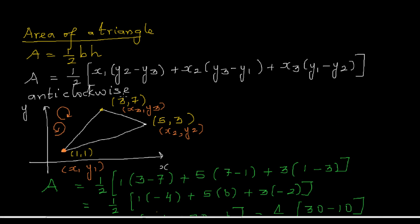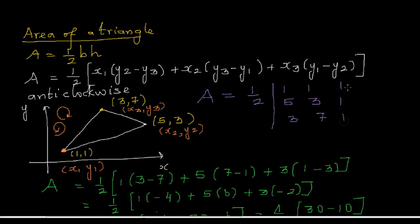For those who have learned determinants or matrices, this same formula can also be written in matrix form. Area equals half times the determinant of the matrix with rows (1, 1, 1), (5, 3, 1), (3, 7, 1). The 1s in the third column are placeholders to make a square matrix, and the coordinates are (1,1), (5,3), and (3,7). If you find the determinant, it gives 20, and half of that is 10.